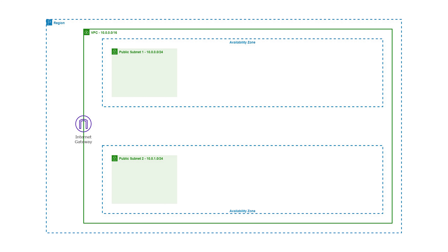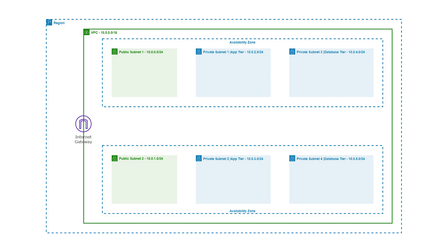On the first tier, we'll create a public subnet in two different availability zones. We'll create a private subnet for our EC2 instance in two different availability zones on the second tier. And on the third tier, we'll create another private subnet in two different availability zones for our database.